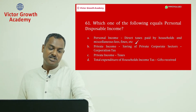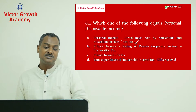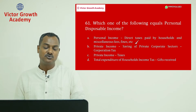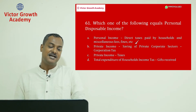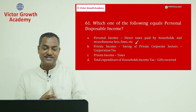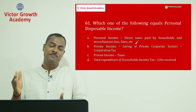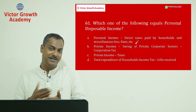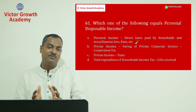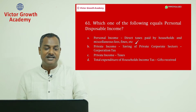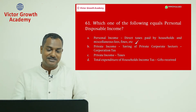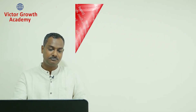Question number 61 answer is A: personal income minus direct tax paid by the households and miscellaneous fees and fines. This is what is known as personal disposable income. Once you get your salary, you have many commitments — you pay EMIs, taxes, and other expenses. What is exactly available for your own family expenditure is personal disposable income.